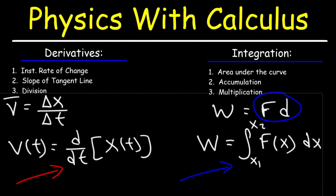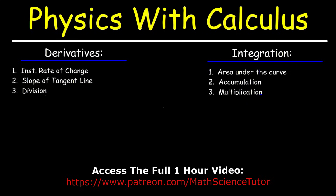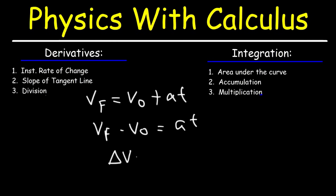Let's start with a familiar formula from your physics textbook: final velocity equals initial velocity plus acceleration times time. Moving initial velocity to the other side gives V final minus V initial equals AT. This represents the change in velocity, written as delta V, so: the change in velocity equals acceleration multiplied by time.